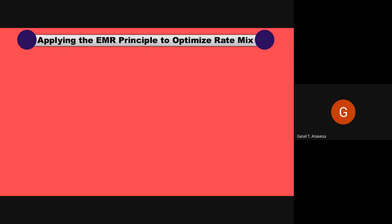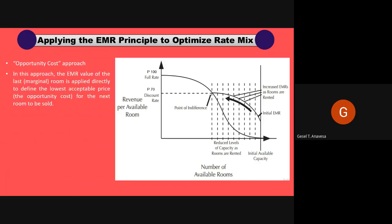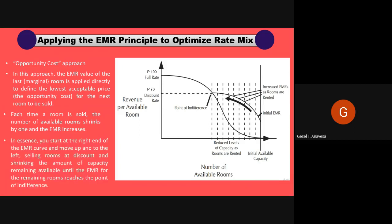The second and more preferable method is referred to as the opportunity cost approach. In this approach, the EMR value of the last room is applied directly to define the lowest acceptable price for the next rooms to be sold. As long as the rate requested is above the EMR opportunity cost, the sale is permitted. Each time a room is sold, the number of available rooms shrinks by one and the EMR increases. In essence, you start at the right end of the EMR curve and move up to the left, selling rooms at discounted rates and shrinking the remaining capacity until the EMR reaches the point of indifference, at which point you would stop selling at a discounted rate.